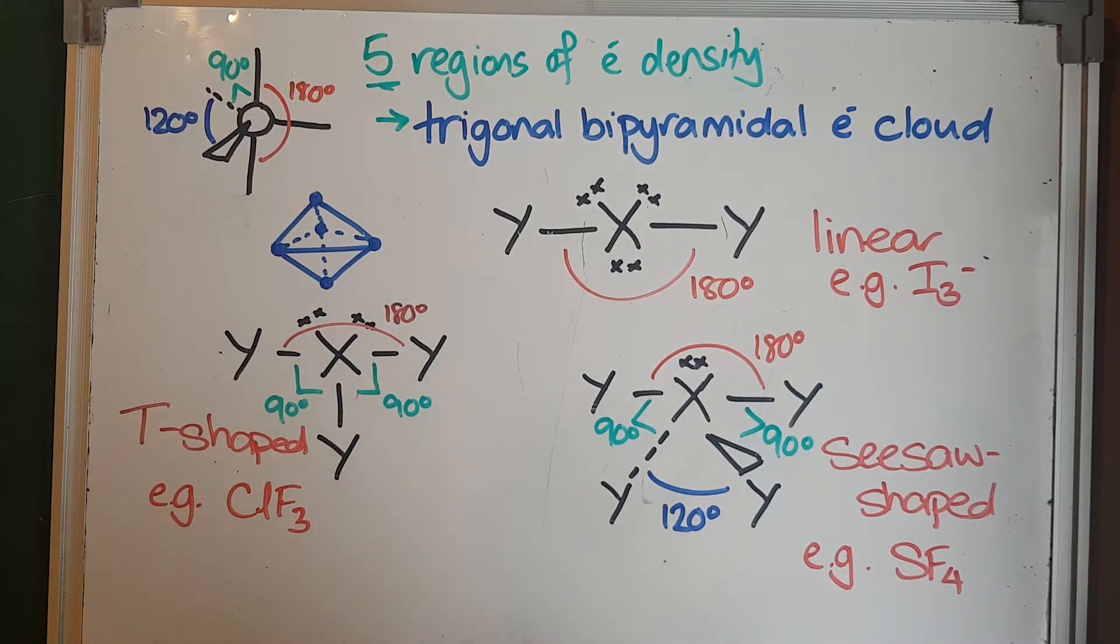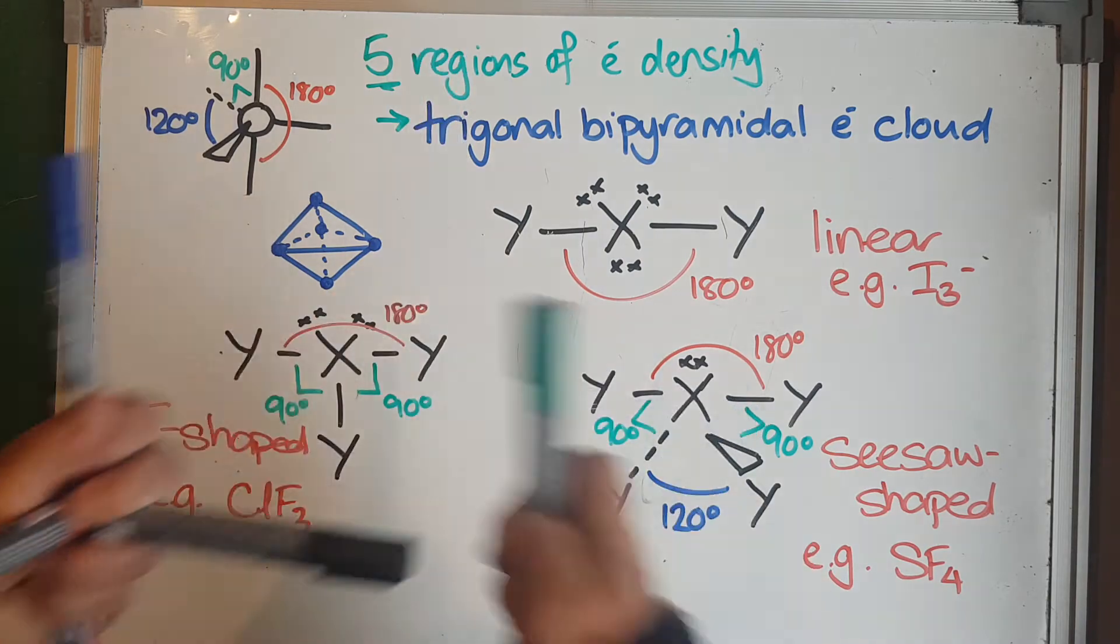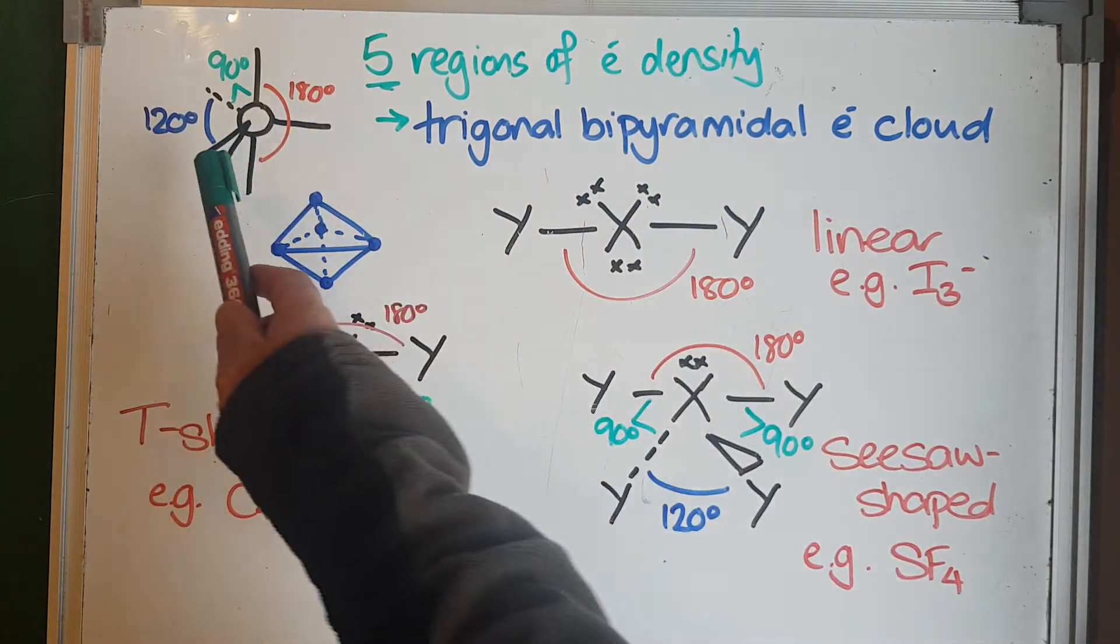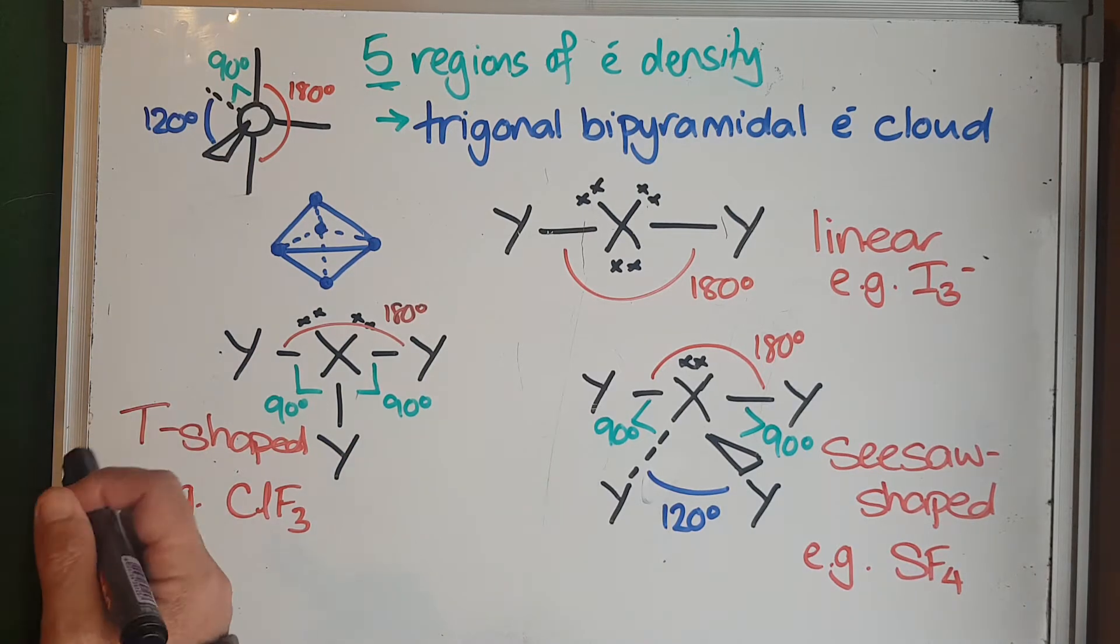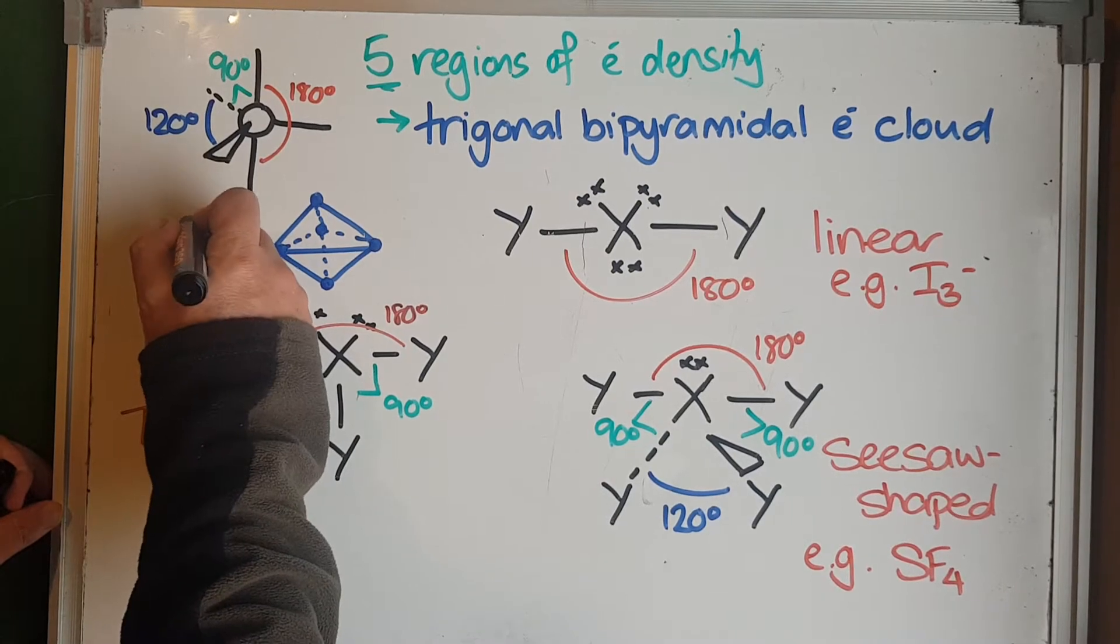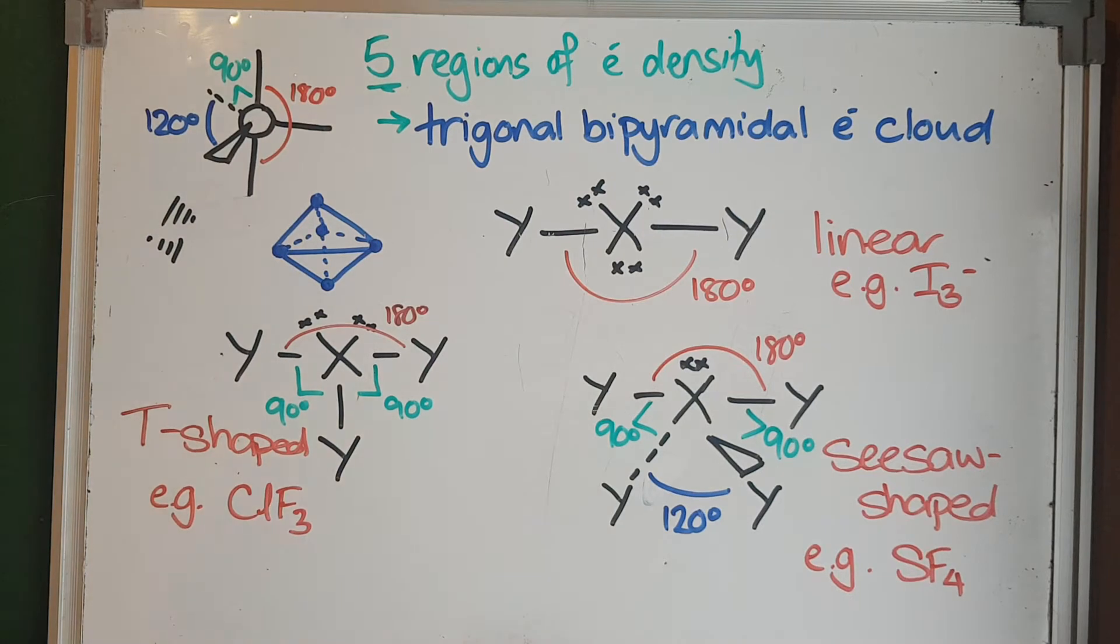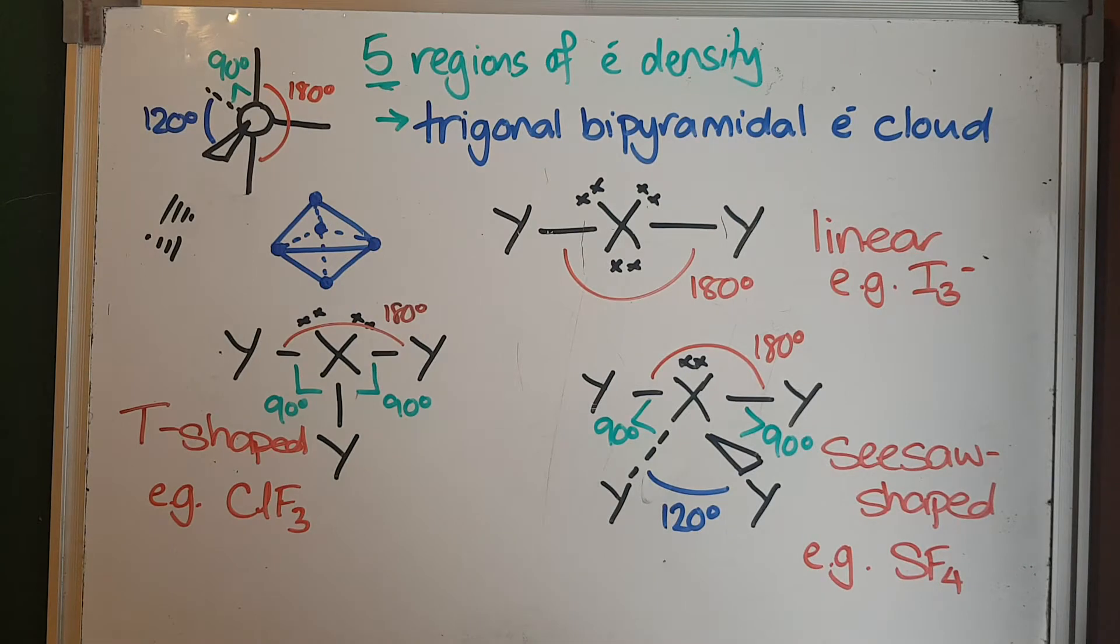The other two: one comes out at us, so we show that as a triangle, and one goes away into the whiteboard, so we show that as a dashed line. Sometimes you'll see them drawn as dashed lines that get bigger or smaller. They're both the same—they're showing something disappearing into the board or into the page. This shape is creating two triangle-based pyramids effectively.